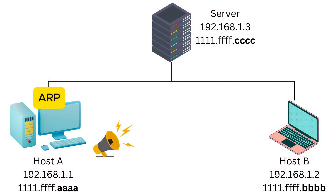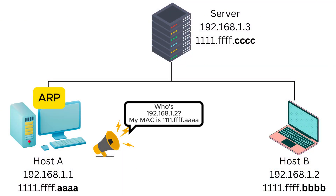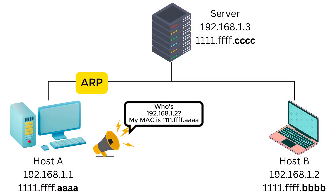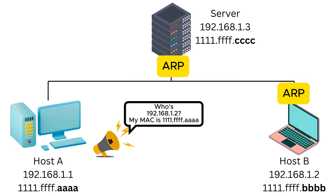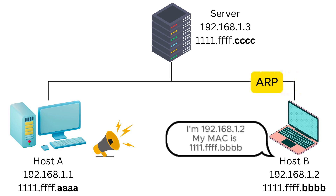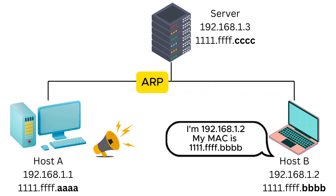It sends out an ARP request, which is a broadcast message asking, "Who has this IP address? Tell me your address." This MAC address is added to the layer 2 header, enabling efficient data transmission between devices within the network.